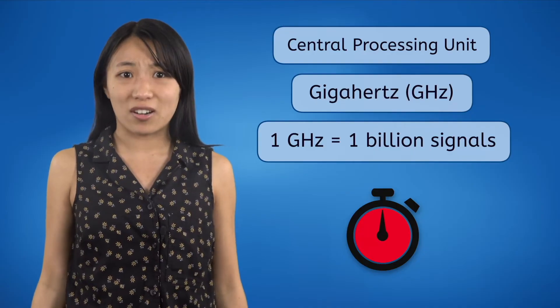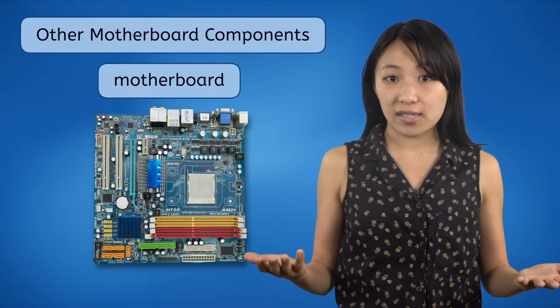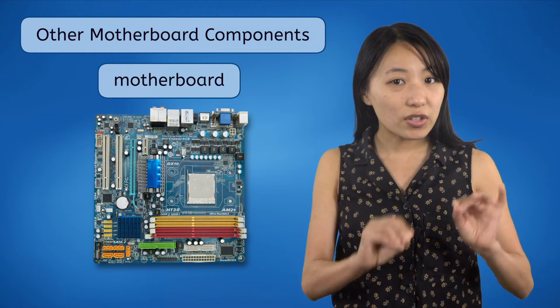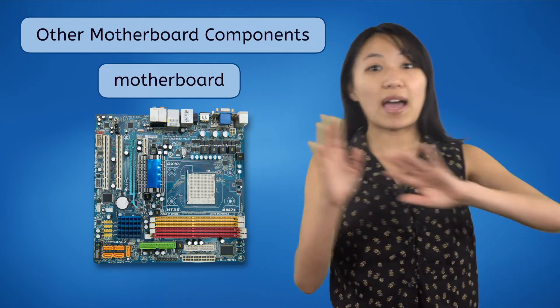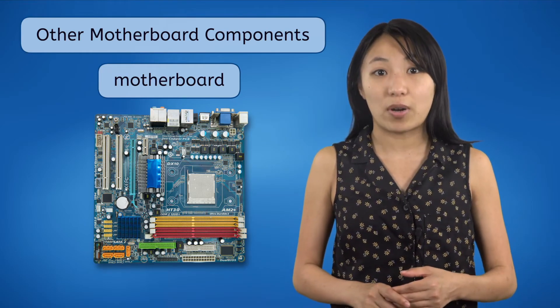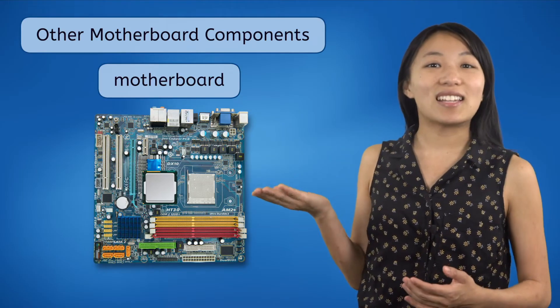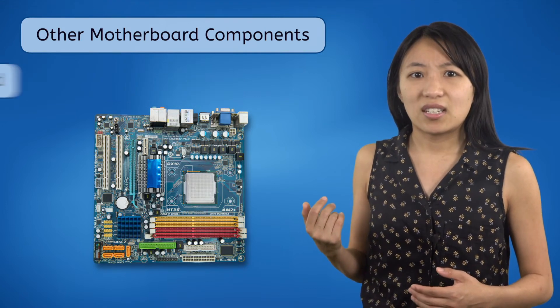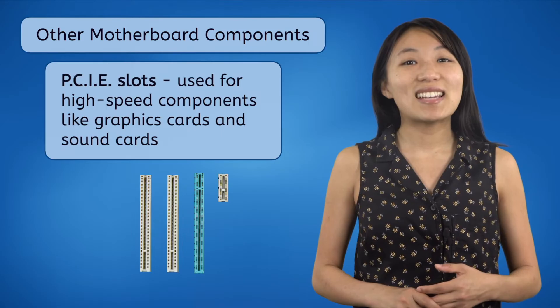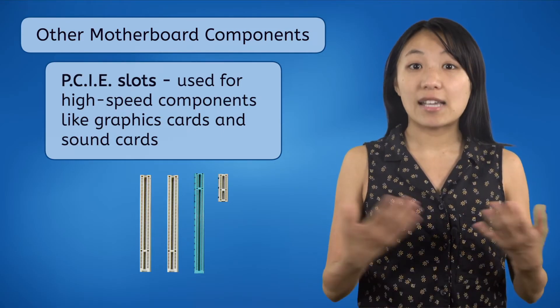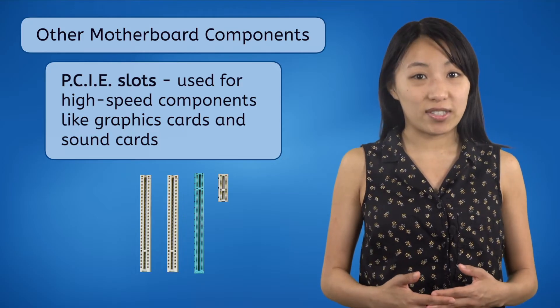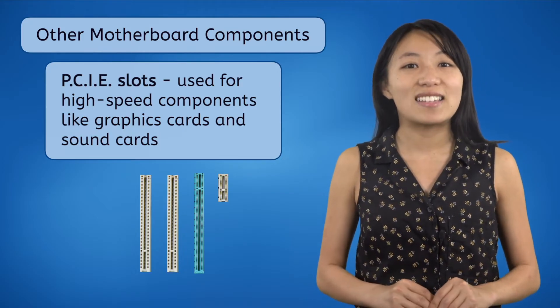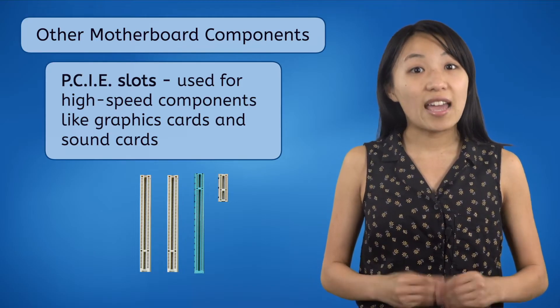In the one second that just passed, those computers were able to do six billion calculations! Talk about a fast computer! Now for the motherboard, the main focus of this lesson. The motherboard is a large board full of circuits. All the components plug into the motherboard, and the circuits carry signals back and forth between the CPU and the other components. These are PCIe slots, which are where extra components that require high-speed data transmissions get plugged into the motherboard.